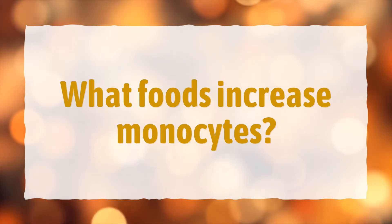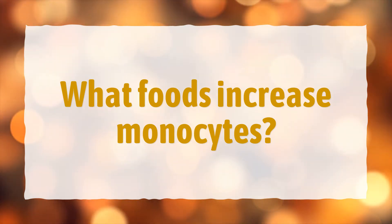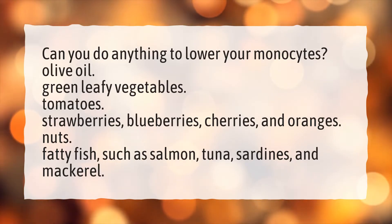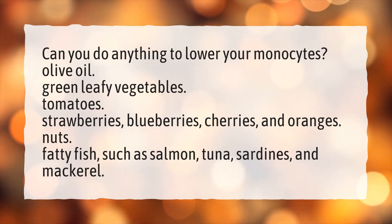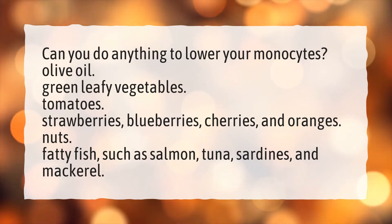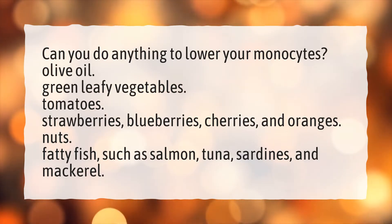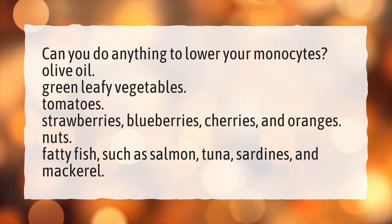What foods increase monocytes? Can you do anything to lower your monocytes? Olive oil, green leafy vegetables, tomatoes, strawberries, blueberries, cherries, and oranges. Nuts, fatty fish such as salmon, tuna, sardines, and mackerel.